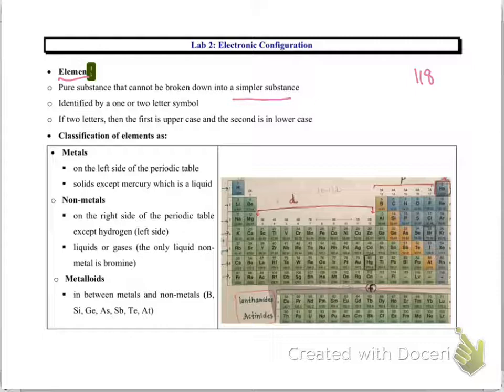Out of that, 90 are naturally occurring, and the remaining 28 have been prepared by scientists in the labs.